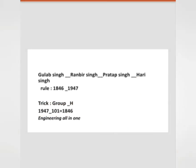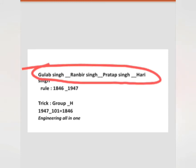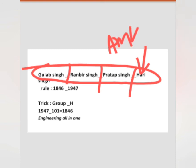Regarding the rulers: Gulab Singh came first, then his son Rambir Singh, then his son Pratab Singh. Hari Singh was not the son of Pratab Singh — Hari Singh was the son of Amar Singh, who was the brother of Pratab Singh.